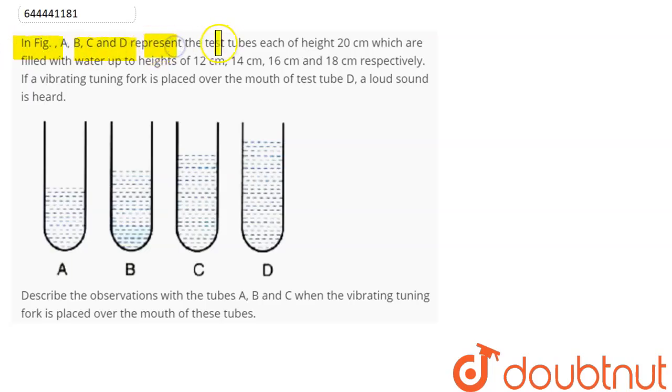In figure A, B, C, and D represent the test tubes, each of height 20 centimeter, which are filled with water up to heights of 12, 14, 16, and 18 centimeter respectively. If a vibrating tuning fork is placed over the mouth of test tube D, a loud sound is heard. Describe the observations with test tubes A, B, and C when the vibrating tuning fork is placed over the mouth of these test tubes.